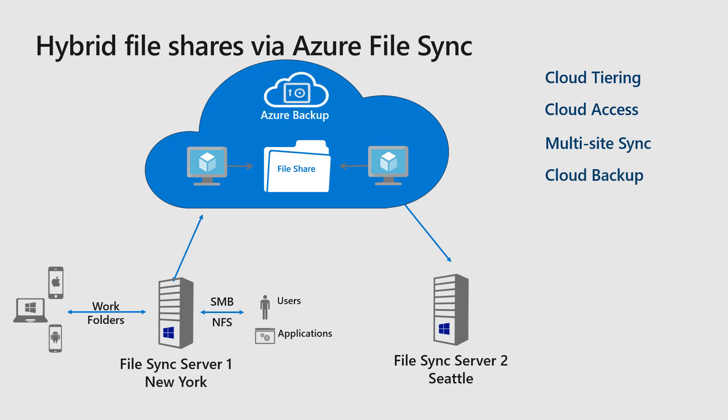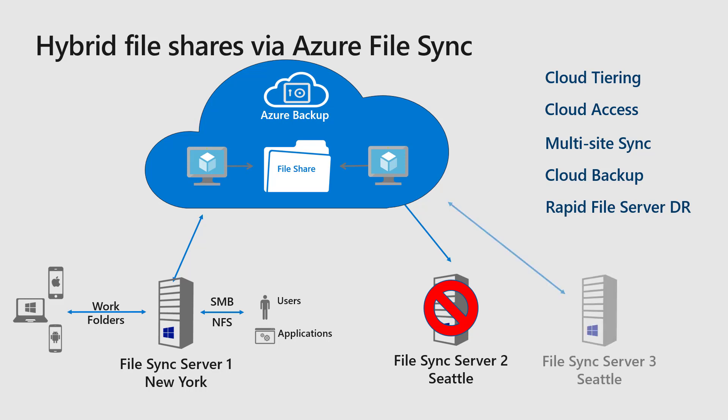The fourth option Azure File Sync gives us is we can leverage Azure Backup to backup files directly from the file share without the need of a local backup. So if we need to restore something, we can directly do that from Azure Backup. Another great advantage of this scenario is disaster recovery. Let's say server two in Seattle is failing — the only thing we need to do is set up a new server and install the Azure File Sync agent and start downloading the files.